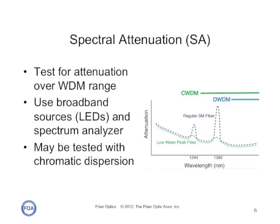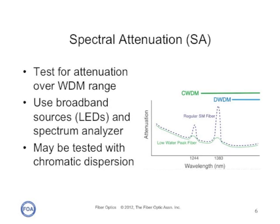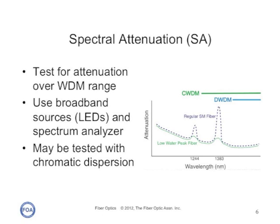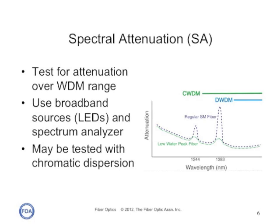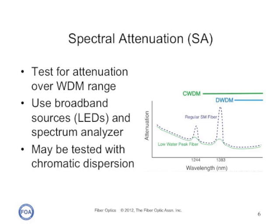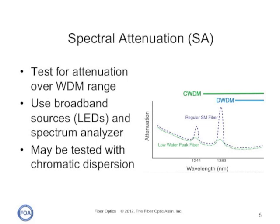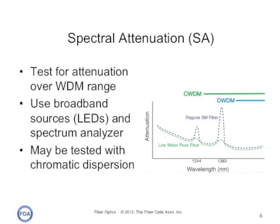The use of wavelength division multiplexing, particularly coarse wavelength division multiplexing, may require measuring the spectral attenuation of the fiber. This is particularly important where CWDM is expected to be used on fibers that have not been qualified as low water peak fibers. Spectral attenuation is measured using a broadband source, typically an LED, and a spectrum analyzer. This test can be performed similarly with a chromatic dispersion test set, so both tests may be done at the same time.